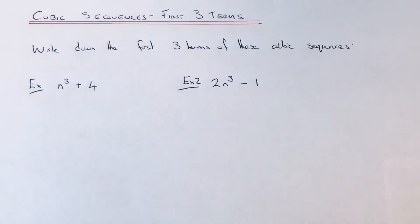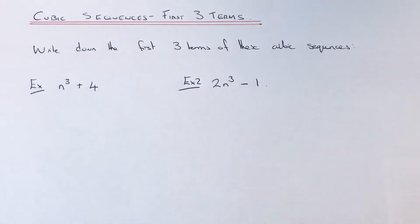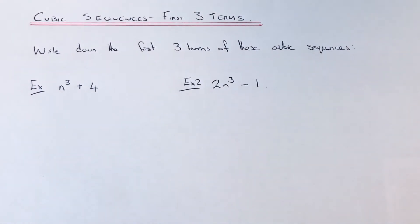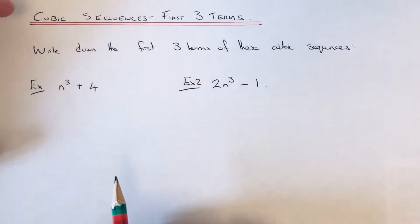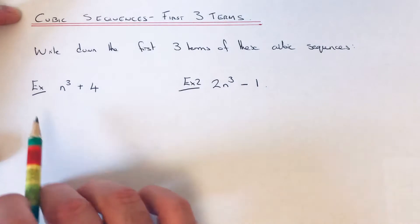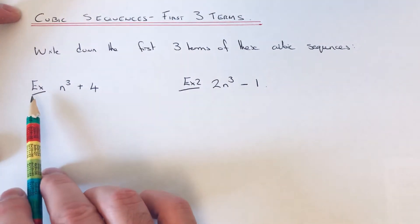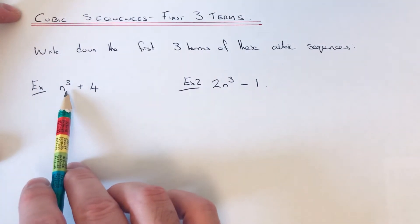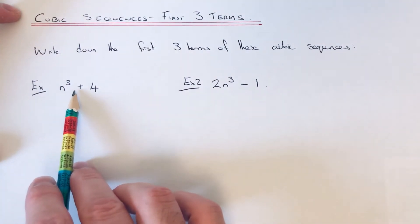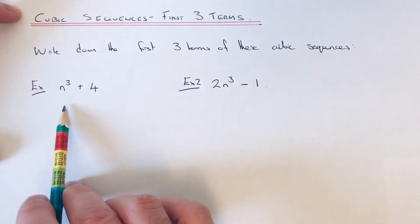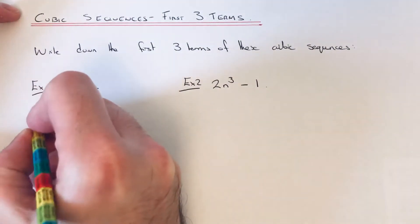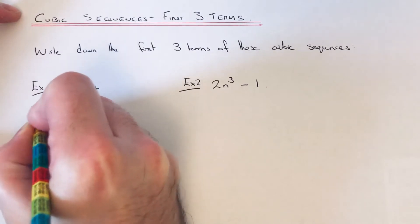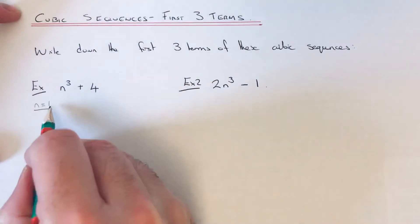Hi guys, welcome back. Today I'm going to show you how to write down the first three terms in a cubic sequence. Let's have a look at the two examples here. Our first one has an nth term of n cubed plus 4. Let's start off with our first term, n equals 1.